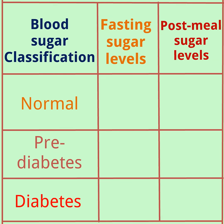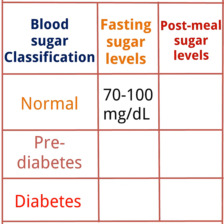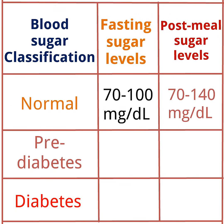If your fasting blood glucose is between 70 to 110 mg per deciliter, then you are normal. For a normal human, the post-meal blood sugar level is between 70 to 140 mg per deciliter.